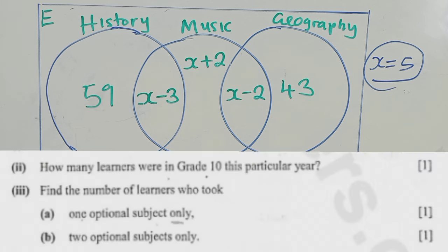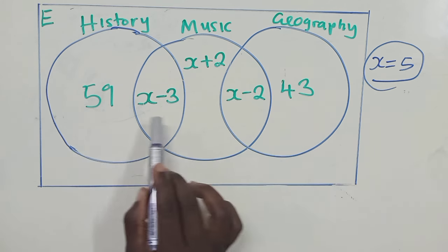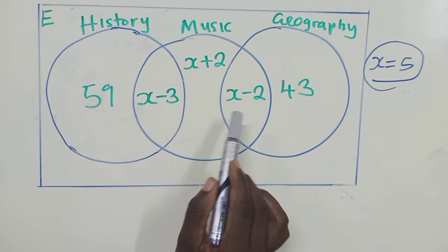So the next question reads, find the number of learners who took two optional subjects only. So two optional subjects. It's their intersection. So right here and here. So there are two here. They did history and music here. It's geography and music, which is their intersection right here.